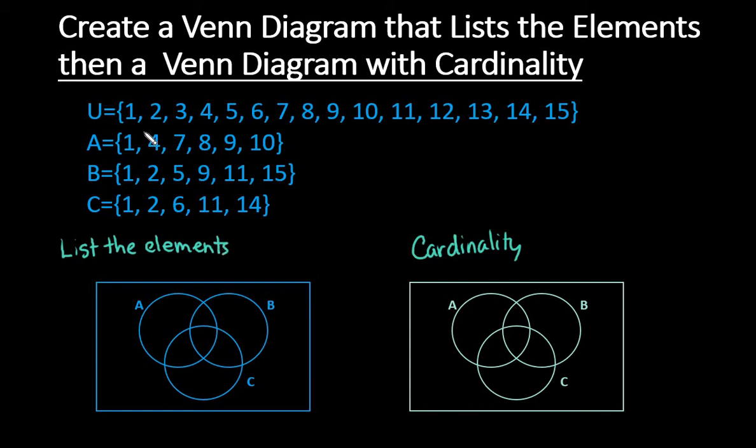So what I have here is the universal set is the numbers from 1 through 15, set A contains the numbers 1, 4, 7, 8, 9, 10, set B contains the numbers 1, 2, 5, 9, 11, and 15, and set C contains the numbers 1, 2, 6, 11, and 14.